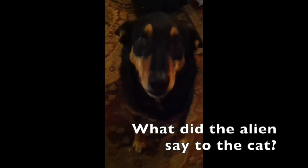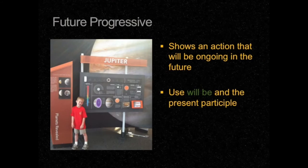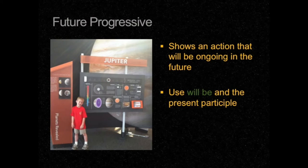Say to the cat: Take me to your litter! Finally, we have the future progressive tense. The future progressive tense shows an action that will be ongoing in the future. In order to form the future progressive tense, you use the helping verbs "will be." And once again, you also use the present participle, which is the -ing form of the verb. For example, we could say: "Every year, many students will be learning about the planets." This is future progressive because it uses the helping verbs "will be" and the -ing form of the verb to make the present participle.